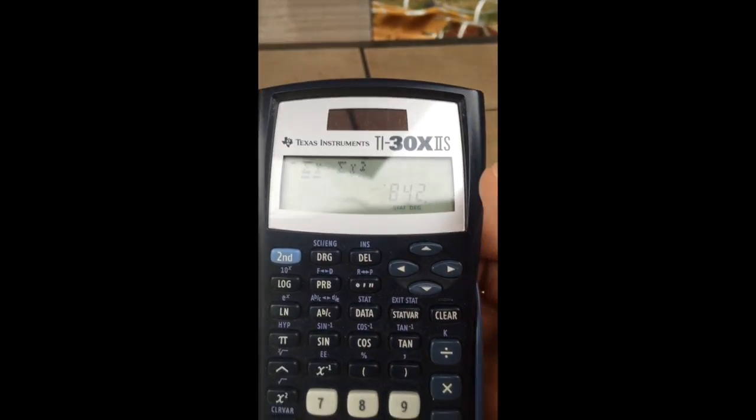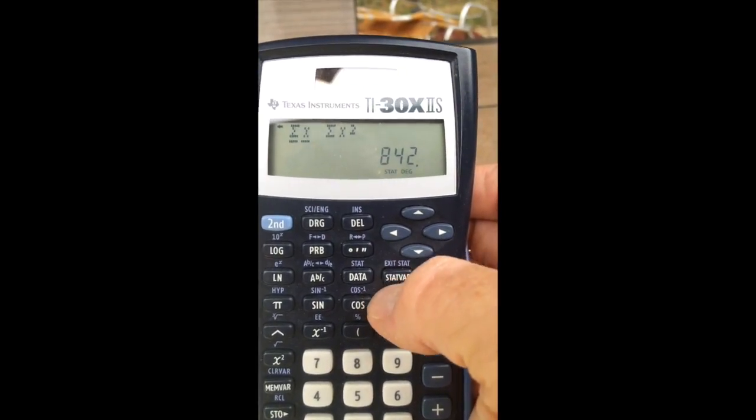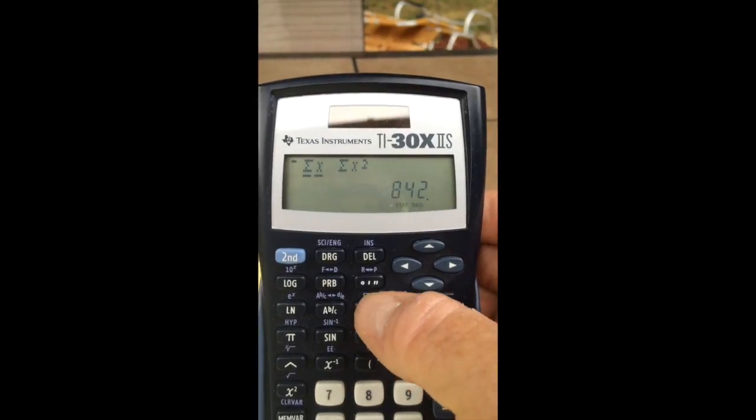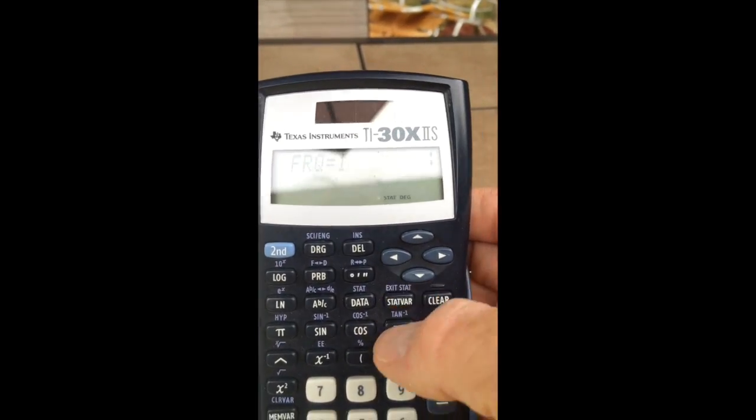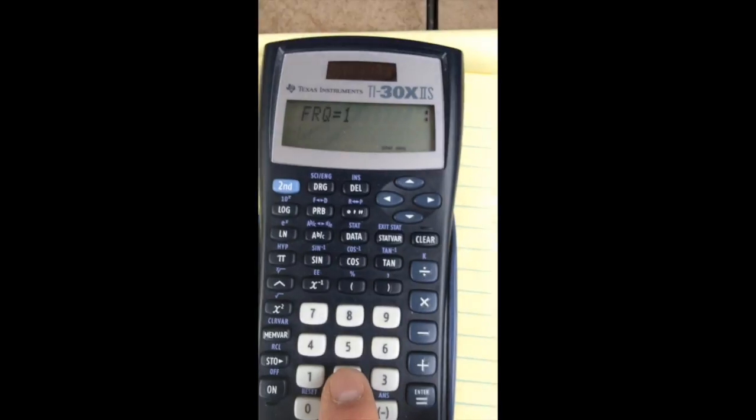Now, let me show you, please, what we would do if this was grouped data. Let me come back to data. And let's say I had two 78s. So the frequency, I would say I have two of them.